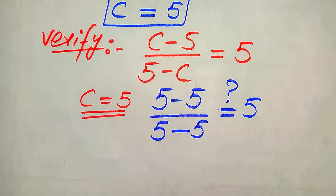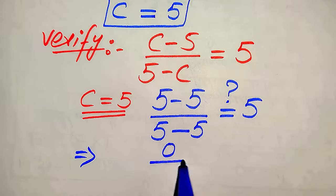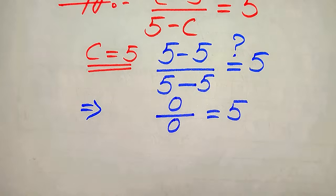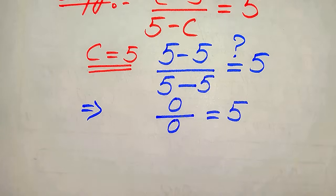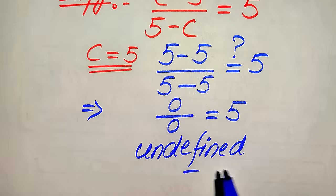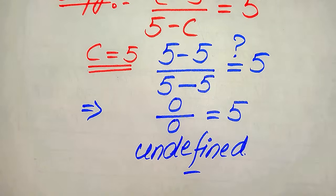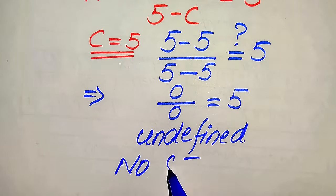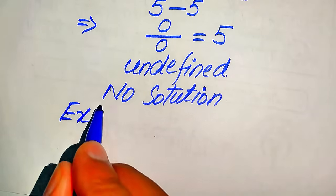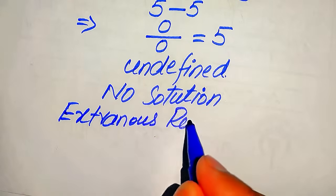We check whether this equals 5 or not. We see that 5 minus 5 becomes 0 in the numerator, and 5 minus 5 is also 0 in the denominator, giving 0 over 0. This is called the undetermined or undefined form. Since this is undefined, the value c equals 5 does not satisfy the given equation. Therefore c equals 5 is an extraneous root, and this equation has no solution.